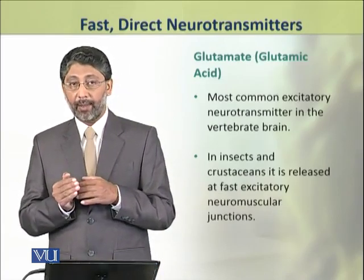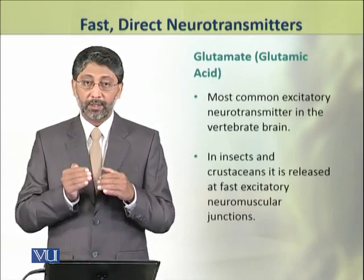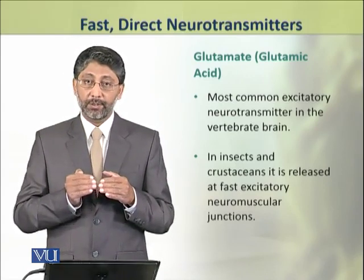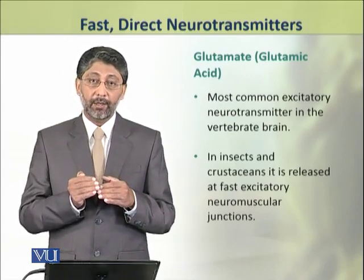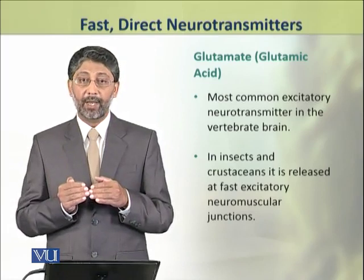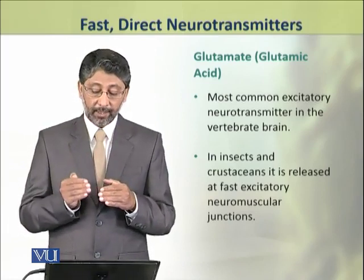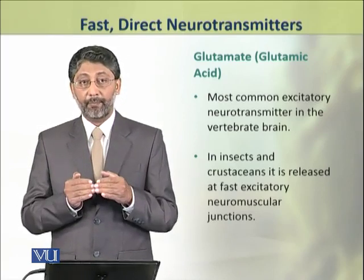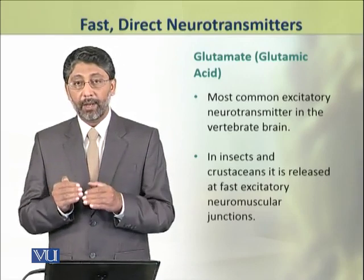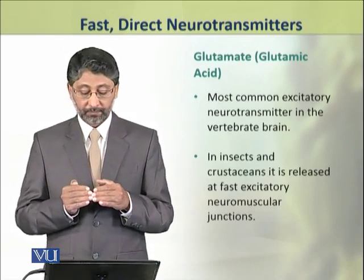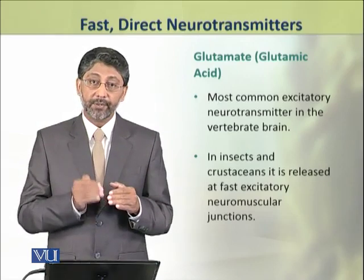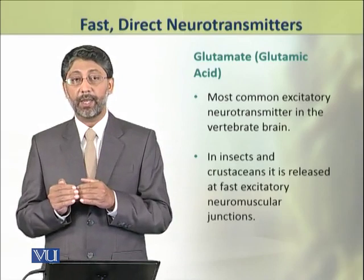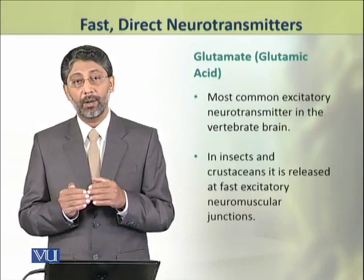Dear students, after acetylcholine, the second important neurotransmitter that performs fast direct action is glutamate. While acetylcholine is the most common neurotransmitter at neuromuscular junctions, glutamate is the most common excitatory neurotransmitter in the vertebrate brain. In insects and crustaceans, glutamate plays a fast excitatory role at their neuromuscular junctions.